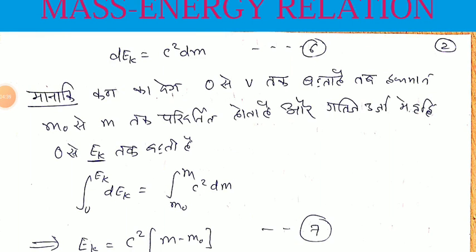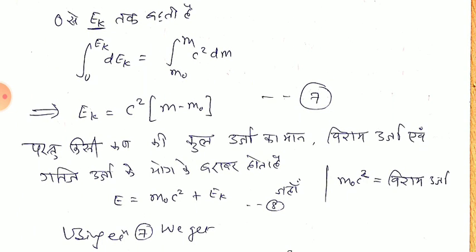We can obtain that dE_k equal to c squared dm. As velocity increases from 0 to v, and mass increases from m₀ to m, the gain in kinetic energy goes from 0 to E_k. So we integrate kinetic energy from 0 to E_k and mass from m₀ to m. This gives equation 6: E_k minus 0 equal to c squared multiplied by m minus m₀.